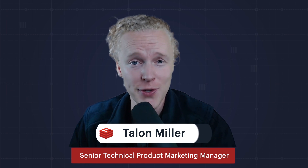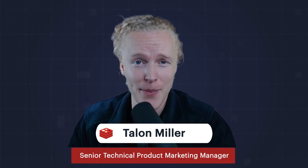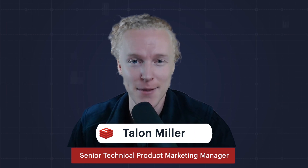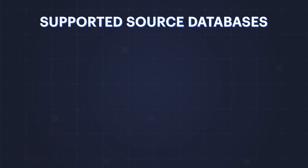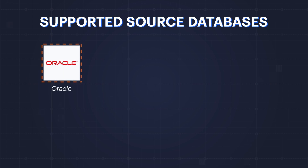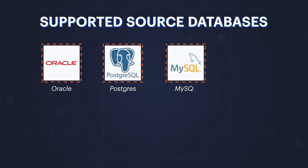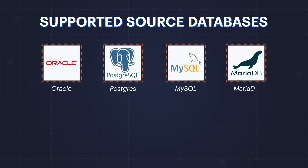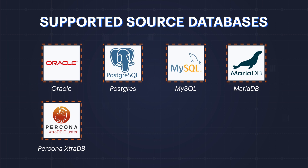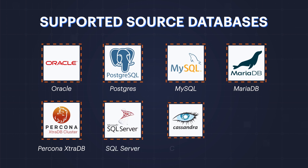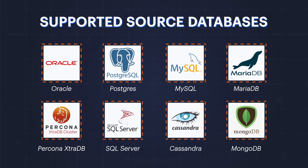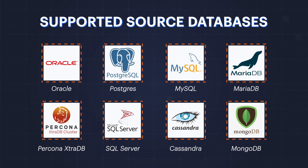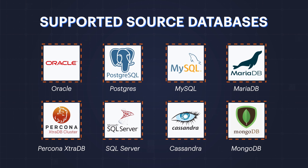You're probably wondering what source databases RDI is compatible with. In public preview, supported source databases are Oracle, Postgres, MySQL, MariaDB, Percona XtraDB, SQL Server, Cassandra, and MongoDB. Quite a list. So with that, let's jump into our lightning demo use case.